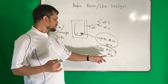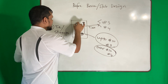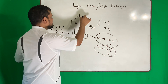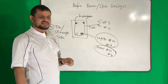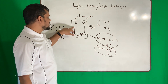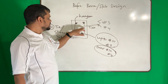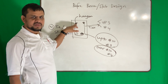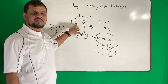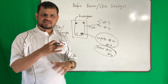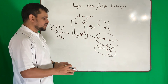Sometimes we use a hanger bar to hold the tie in place. The hanger size is typically one size larger than the tie: if the tie is #3, the hanger is #4; if the tie is #4, the hanger is #5. Many companies always use #5 for hangers — that is acceptable as a general practice.